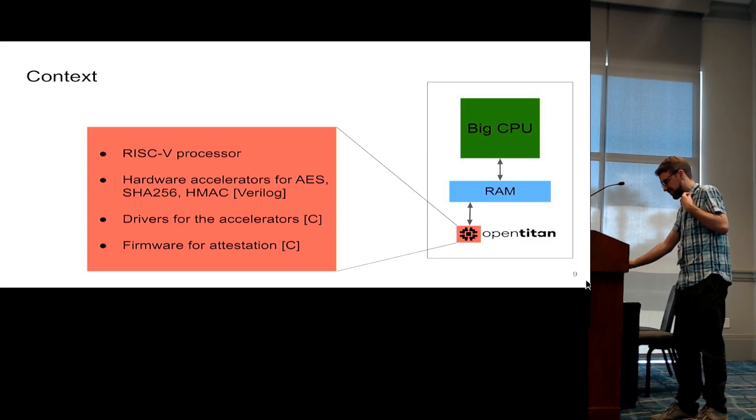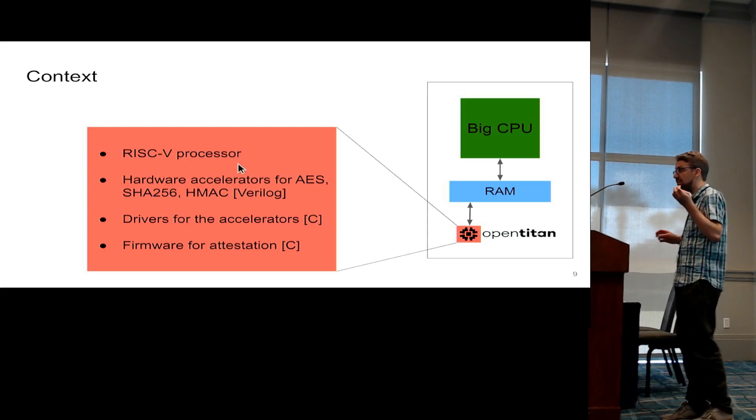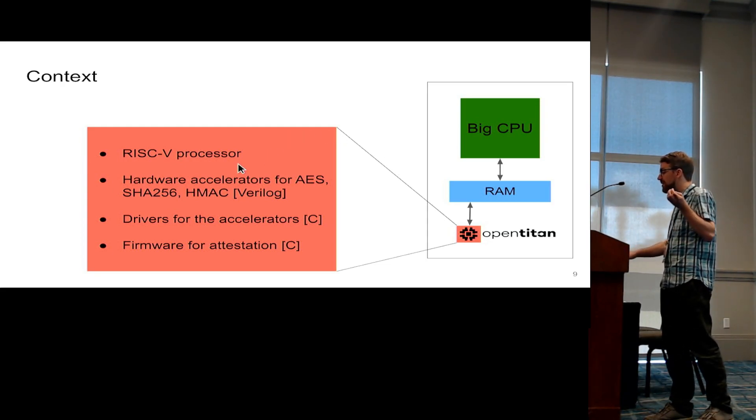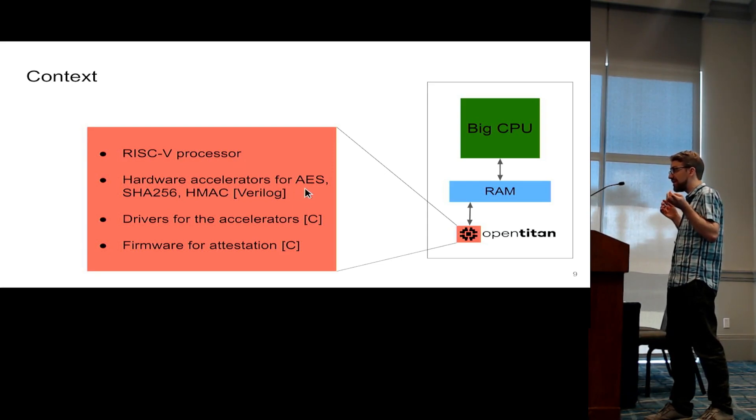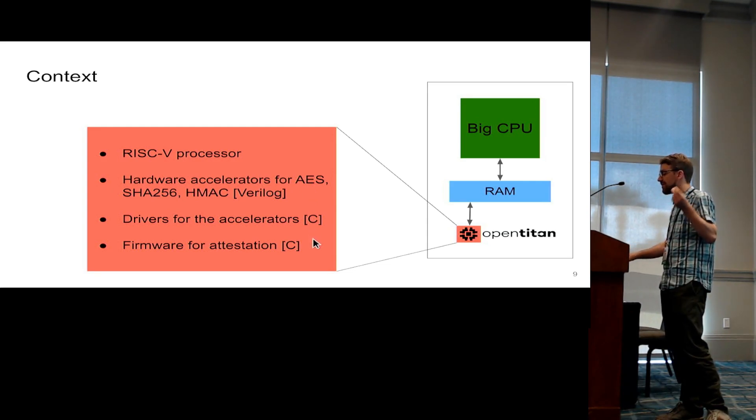And so if you look closer into this OpenTitan processor, it actually consists of an off-the-shelf RISC-V processor, and then it uses hardware accelerators for important cryptographic operations that are happening a lot there, and then it has some drivers written in C for the accelerators, and the firmware for all the attestation.